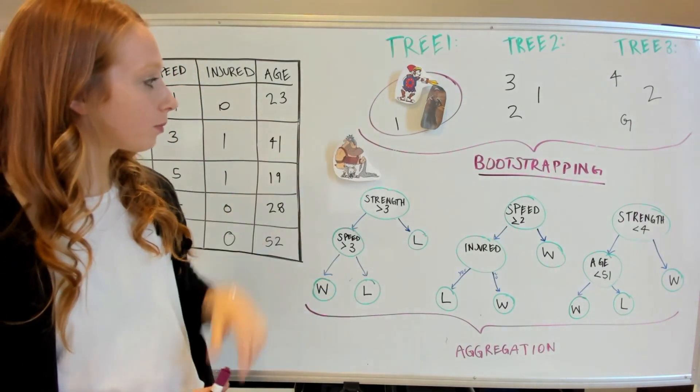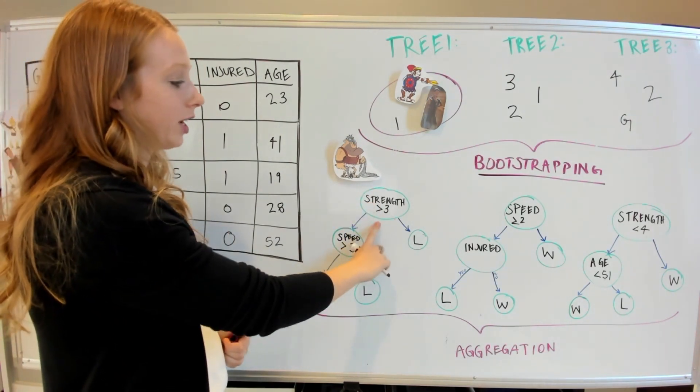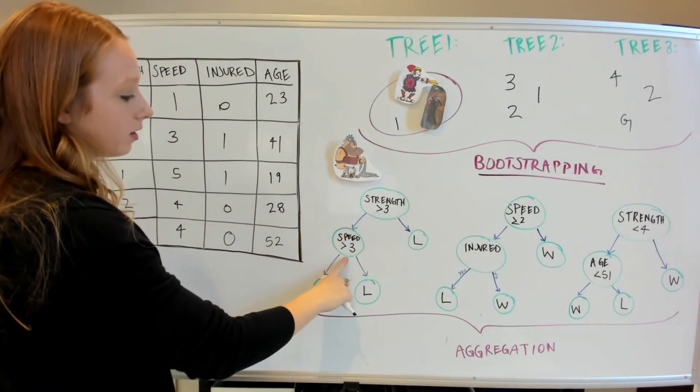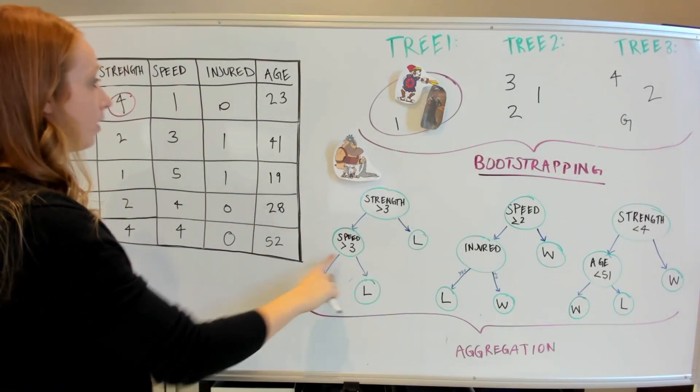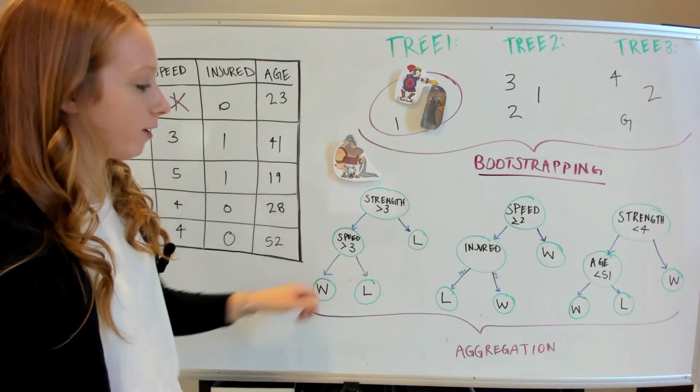Now to evaluate the gladiators, let's go through the process together. For gladiator 1, we'll ask ourselves, does gladiator 1 have a strength greater than 3? Yes. Next we'll ask, does gladiator 1 have a speed greater than 3? No. So it doesn't look too good for gladiator 1.